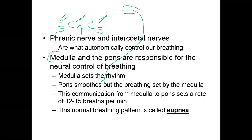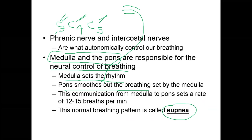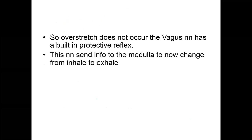The brain stem — specifically the medulla and the pons — neurologically helps control breathing. The medulla sets the rhythm and the pons smooths out the breathing. Normal breathing for an adult should be about 12 to 15 breaths per minute. The medulla knows how to switch gears from inhale to exhale and back through cranial nerve 10, also known as the vagus nerve.